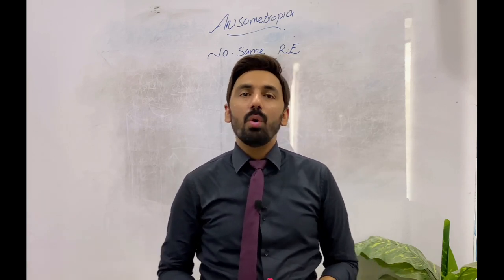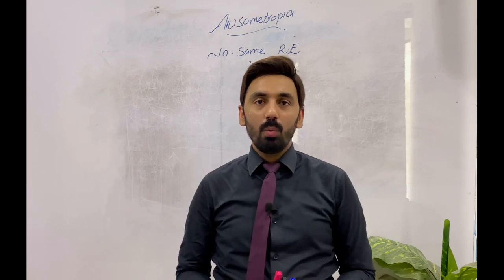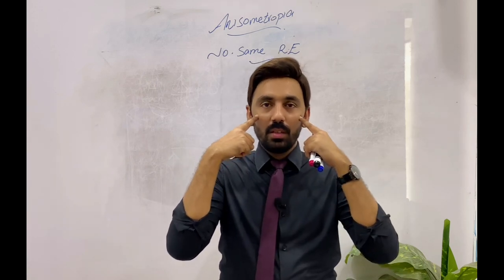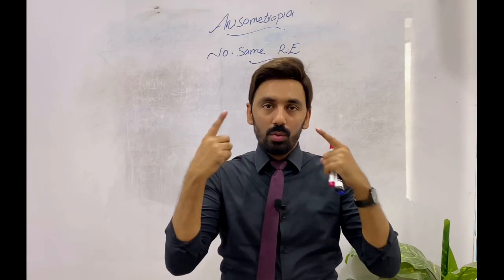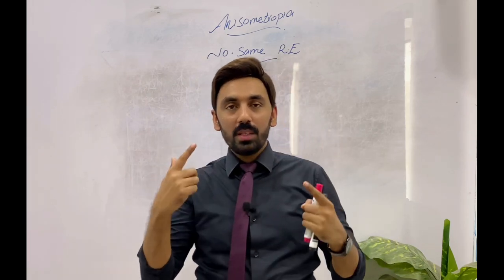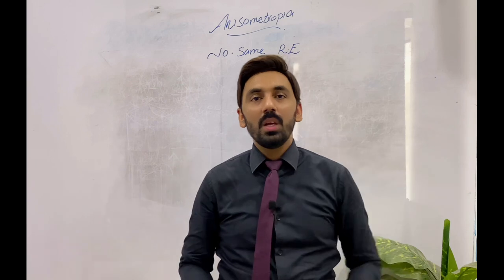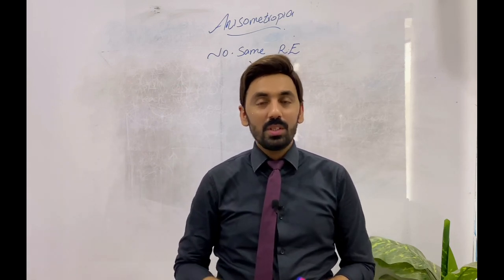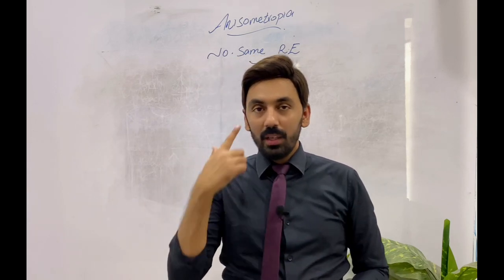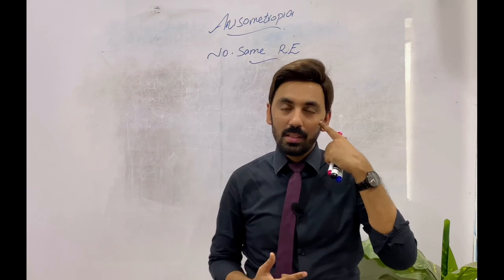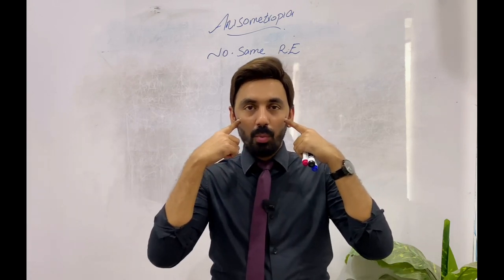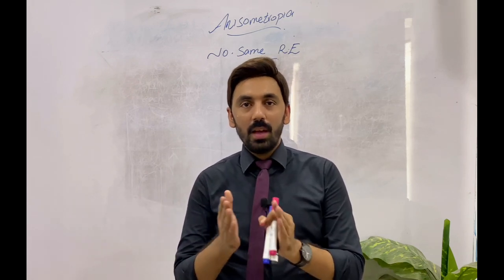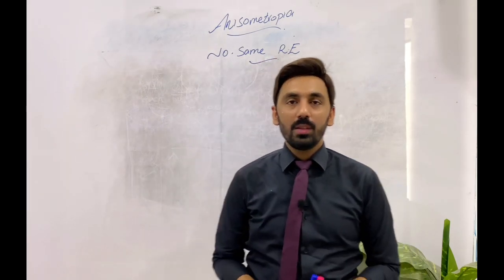The next type is mixed anisometropia. In mixed anisometropia, one eye has myopia and the other eye has hypermetropia. There is unequal refraction in both eyes because one is myopic and the other is hypermetropic. This is also called anti-metropia — when one eye has hypermetropia and the other has myopia, it is called anti-metropia or mixed anisometropia.